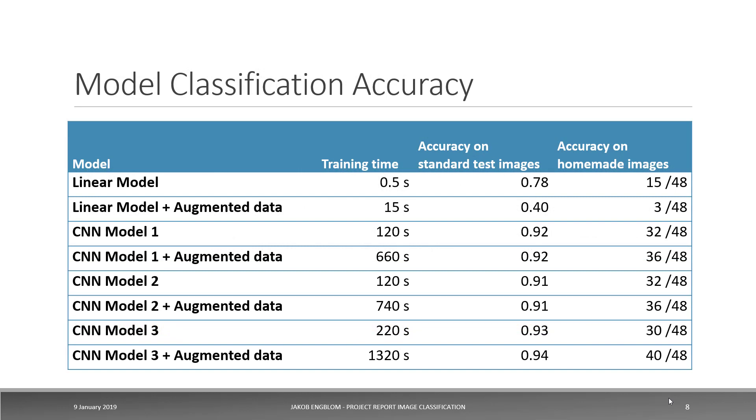The accuracy of the models: the linear model did pretty badly. And when we fed it with augmented data, it did horribly badly because it was fundamentally overwhelmed. It couldn't handle that much variation given its very simple architecture. CNN model three was clearly superior to the other models. And with augmented data, it achieved an accuracy of almost 94% on the standard test images, which is pretty decent. And it got 40 out of 48 of my homemade images right, which is actually also really good compared to some of the other results.